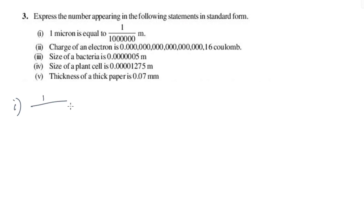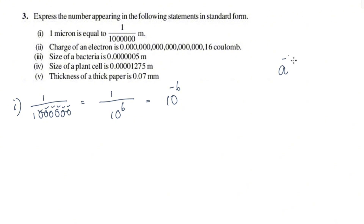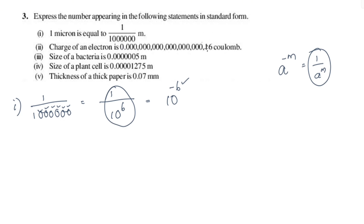The first question is 1 by 1,000,000. The number 1,000,000 is 10 raised to the power 6, so we count the zeros: 1, 2, 3, 4, 5, 6. Therefore 1 by 1,000,000 equals 1 by 10 raised to 6, which is written as 1 × 10⁻⁶ in standard form.